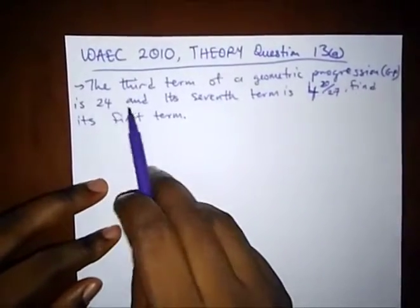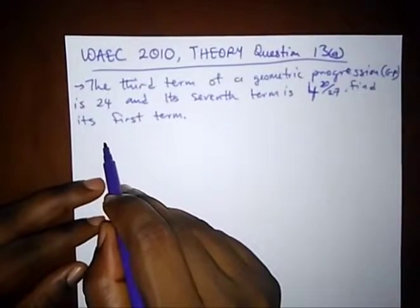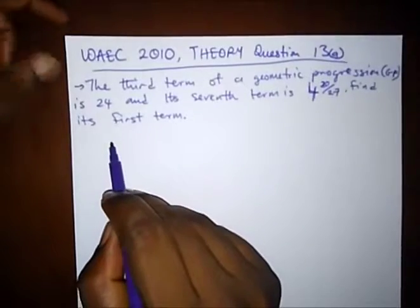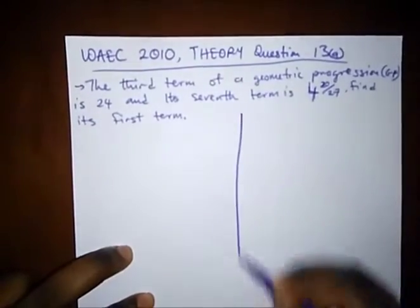So here it says in WAEC 2010 theory question 13a, the third term of a geometric progression, that's GP, is 24 and its seventh term is 4 20/27. Find its first term.